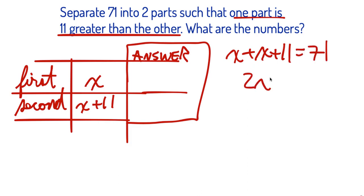Collect like terms. We've got 2x plus 11 equals 71. Solve for x. I'm going to subtract 11 from both sides. You guys already know the drills here. So 71 minus 11 is 60.